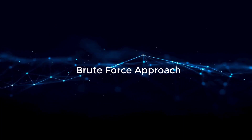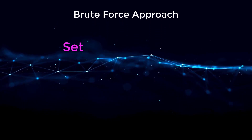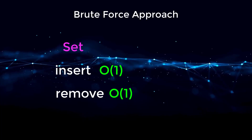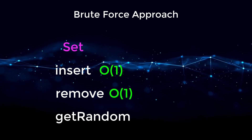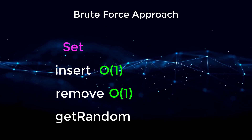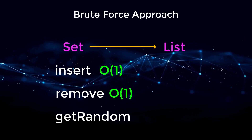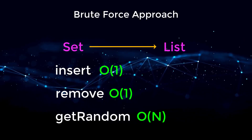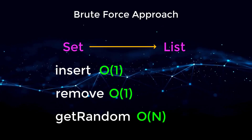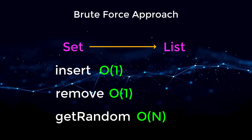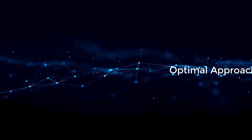Before I jump into the optimized approach, let's go over the brute force. We can have a set data structure that does insert and remove in constant time — that's pretty standard. However, when calling get random, since we need each element to have equal probability, we would have to convert our set to a list, then select an index at random. This would make get random O(n) time complexity, where n is the number of elements, because converting a set to a list requires iterating over the entire set.